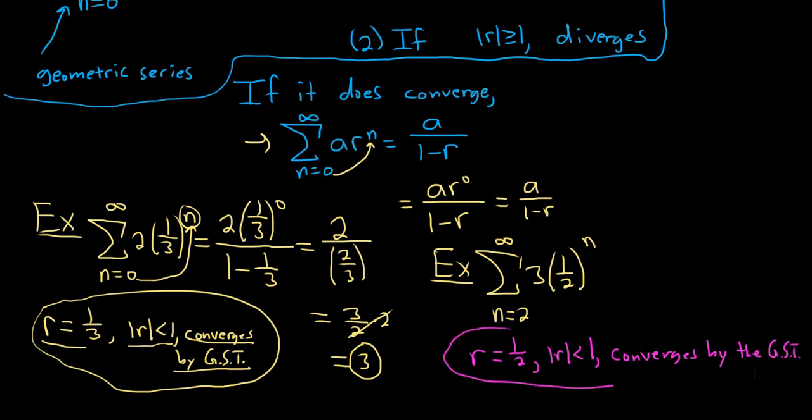So notice the formula only has a zero, but we're better than that. Just take this number and plug it in. It always works, and it goes up top. So it's 3 times 1 half squared. And on the bottom, it's 1 minus r, so 1 minus 1 half. So 3 times 1 half squared is 3 fourths. And on the bottom, we have 1 half.